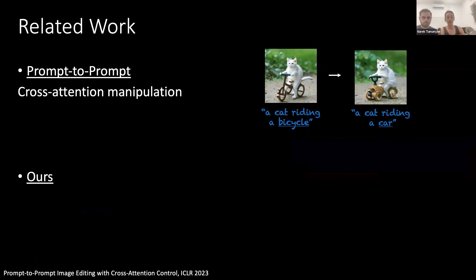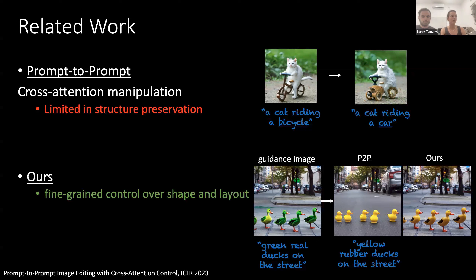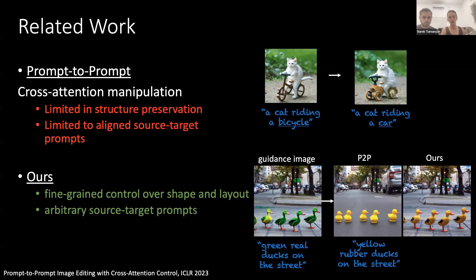Another concurrent work to ours is Prompt2Prompt, where they use a generated guidance image and fix the interaction of the text with the image inside the model to obtain results such as switching a bicycle into a car. But this method has limited structure preservation — the ducks and the street kind of change — while our result shows accurate structure preservation while also fulfilling the edit. Another pitfall of Prompt2Prompt is that they require aligned source-target prompts, whereas we can work with arbitrary source-target prompts, since our method is not really about the text interaction.